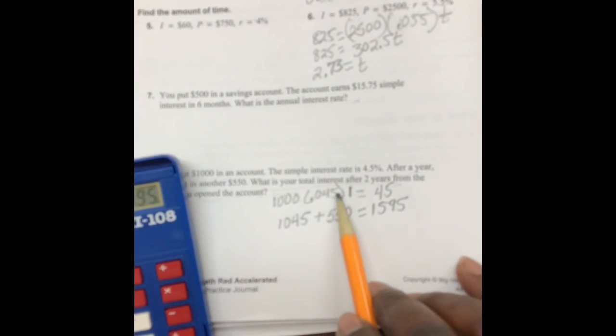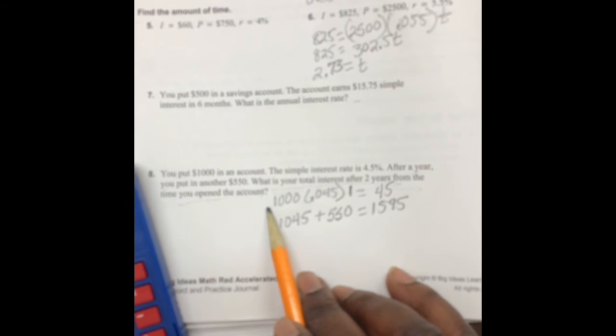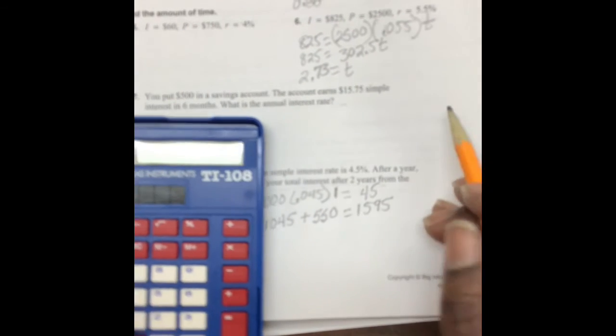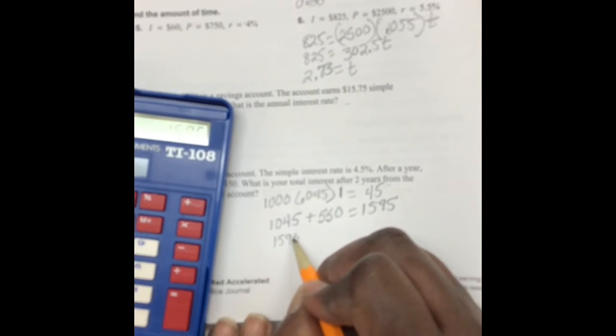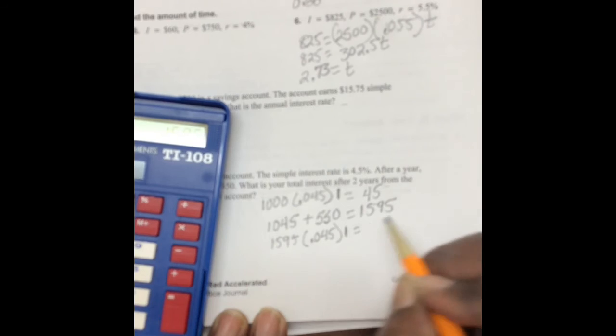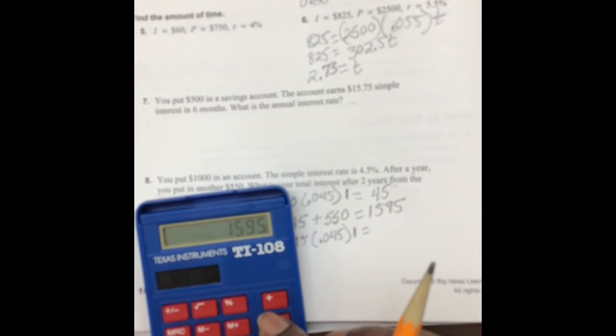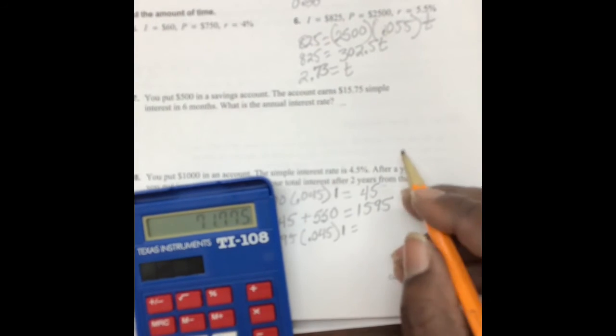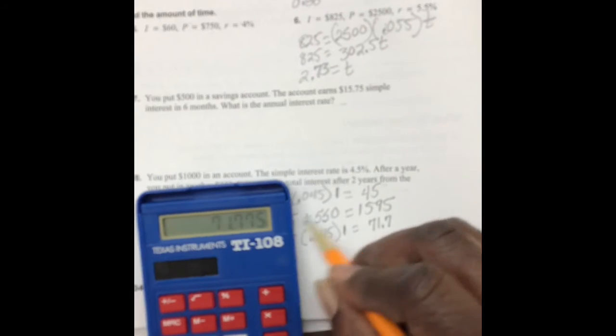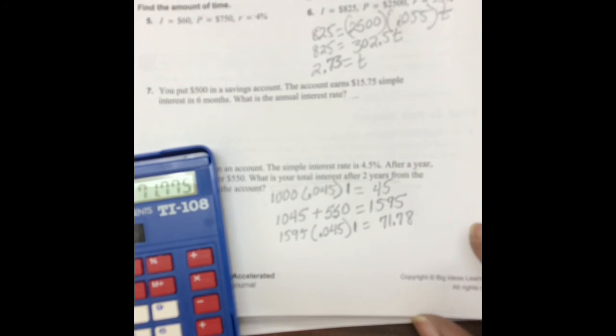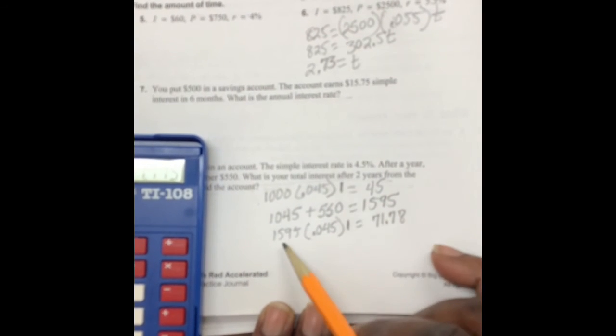Now it says, what is your interest after two years from the time you open the account? So now at the beginning of the second year, this is our principal. So we take this principal amount times our percentage rate, and now we have one additional year. So we have this $1,775. So that's $71.70. Since this five is in the thousandth place, we round up to eight. So that's our interest at the end of the second year. So you take this amount and add it to the original amount.